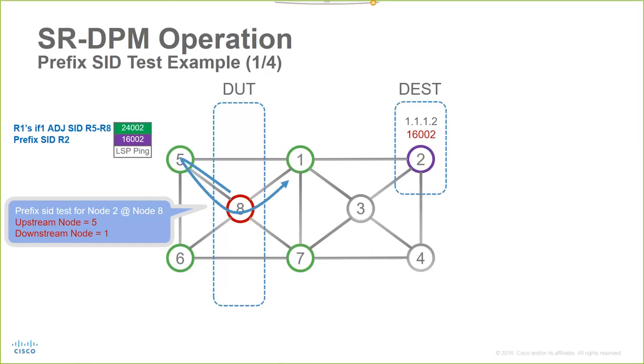In the first iteration, the node verifies the path using router number 5 as an upstream and router number 1 as a downstream. Observe the label stacking post to the test traffic.